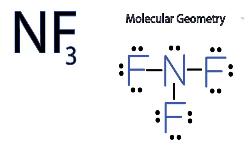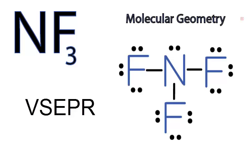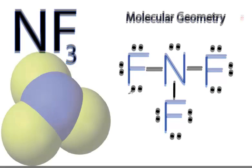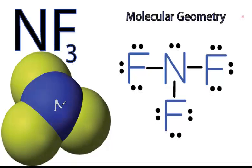If you imagine all those valence shell electron pairs repelling each other, you'll end up with a molecular geometry that looks something like this. We have our nitrogen here in the center, and the green atoms are the fluorine atoms. You can see that these atoms have spread out, but what you don't see here is that lone pair of electrons — let's add that in.